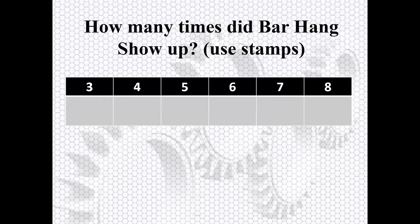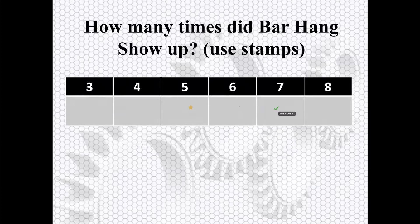Please vote using the stamps — they should be at the top of your screen, the annotation tool. How many times did bar hang show up? Please put a stamp next to the correct number. Levi says four... five... seven's high.